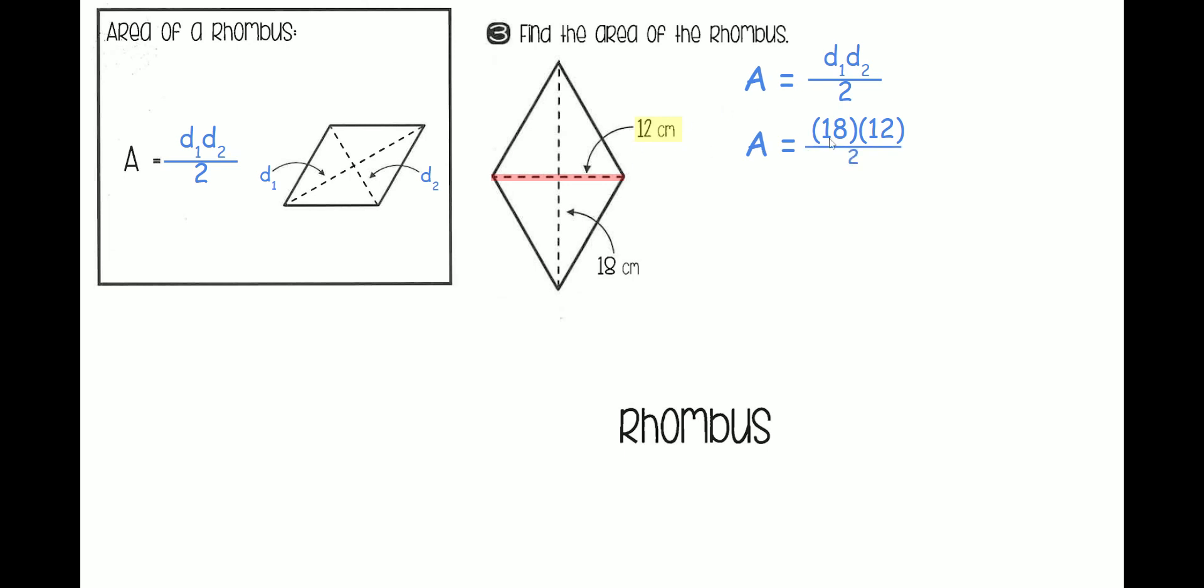Now, if you had written 12 times 18 instead of 18 times 12, you're still going to get the same answer. So it doesn't matter which one you choose as diagonal 1 and which one is diagonal 2. Anyhow, again, if you want to reduce, you can. But we're going to skip that. We're going to multiply 12 and 18.